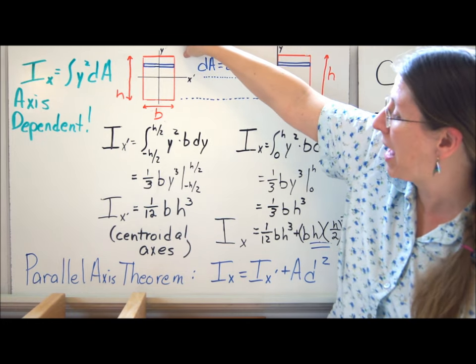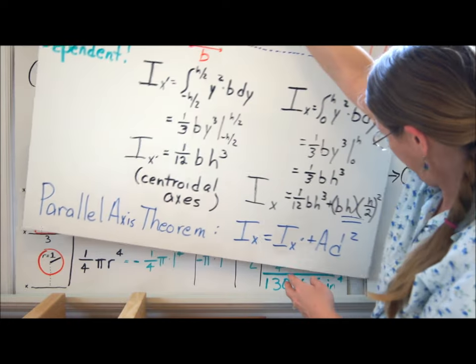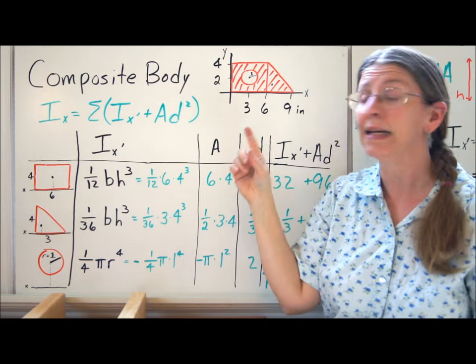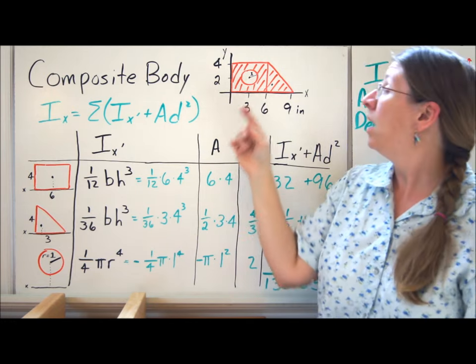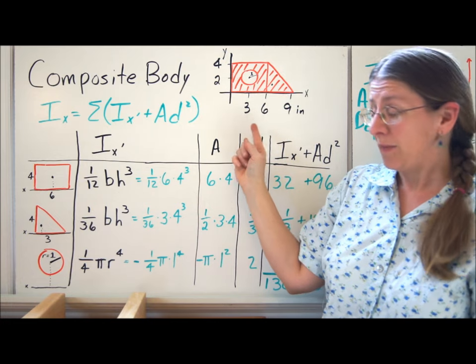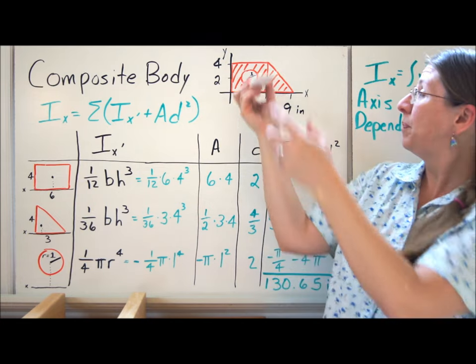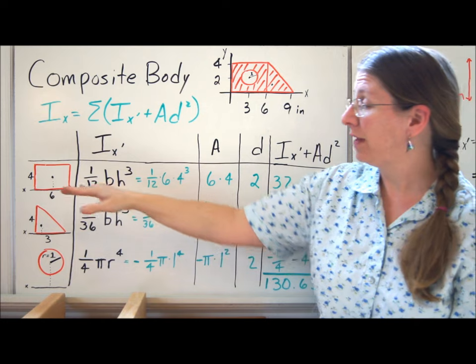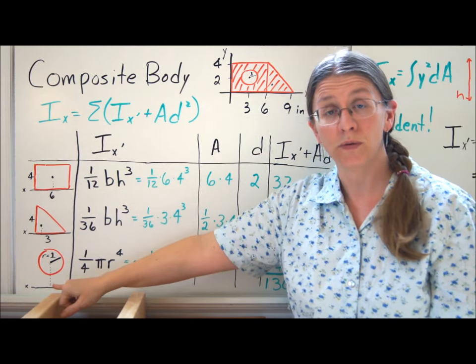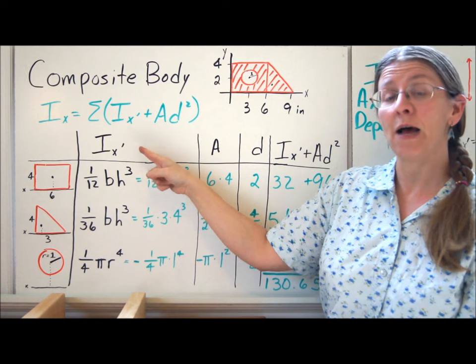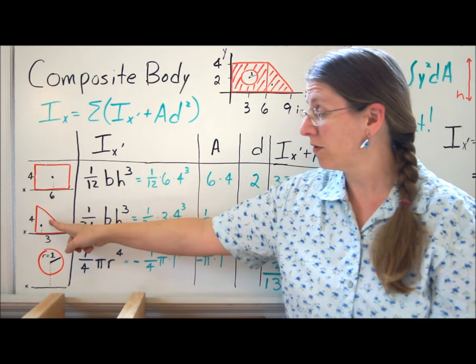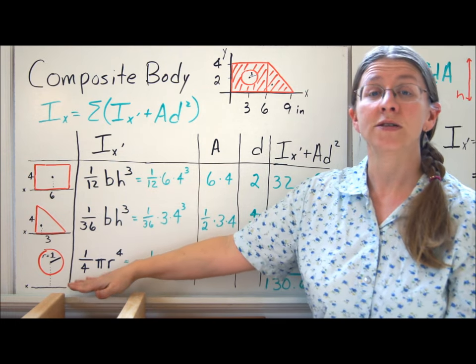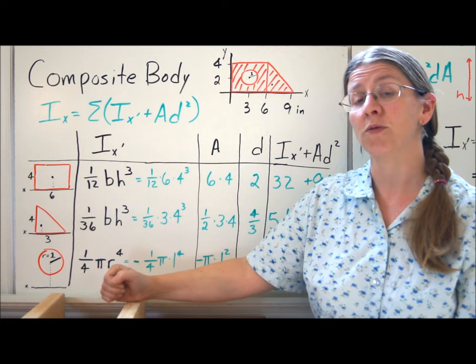When we're doing composite bodies, we have to use the parallel axis theorem also. So here I have a very typical cross-section of something you might see. It's built up of a rectangle, a triangle, and a circle. Given this, the beam would be coming out of the plane of the paper. This is the cross-section. I can break it into these three pieces, the rectangle, the triangle, and the circle. For each of these, I'm going to find Ix about its own centroid, and I marked where those centroids are. These are the formulas that you need to have memorized. These are simply about the centroidal axes for the most common shapes.